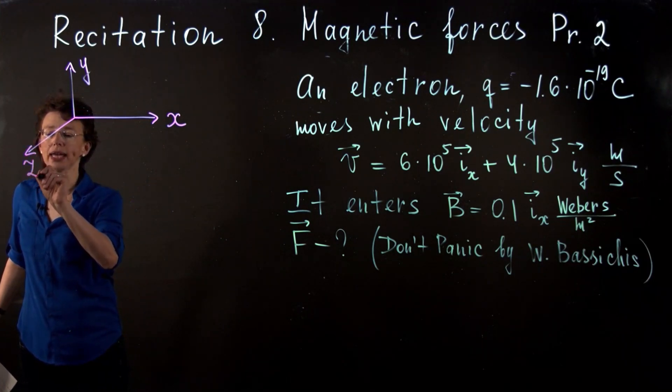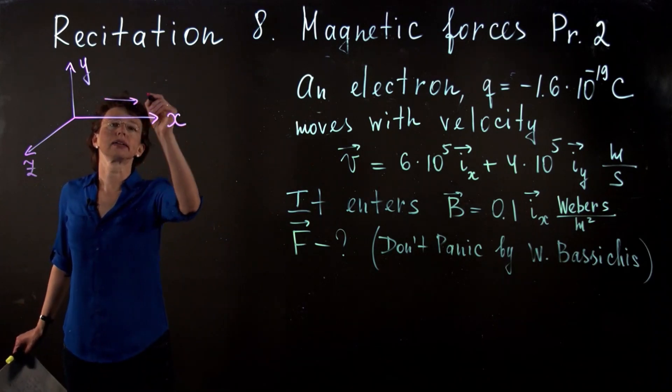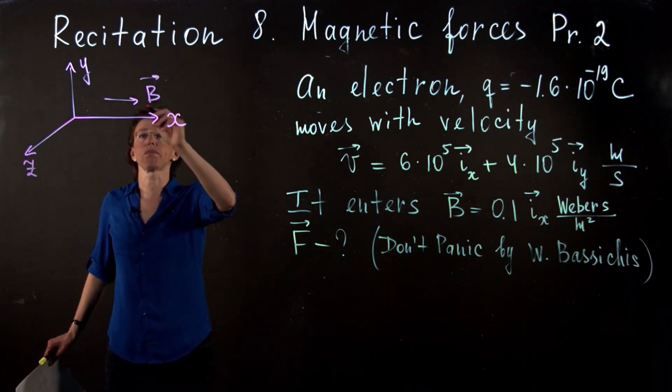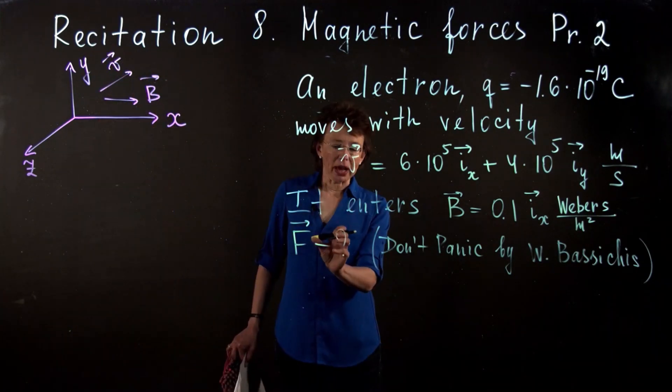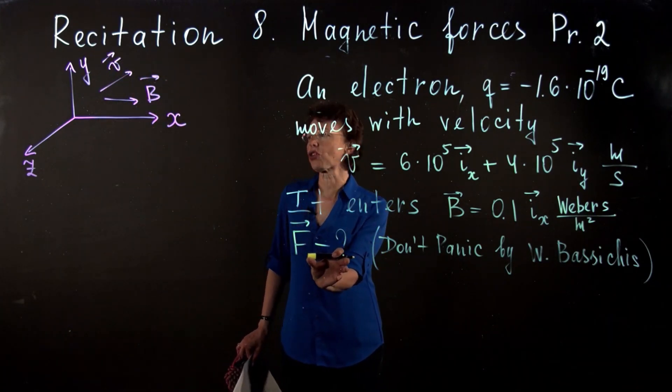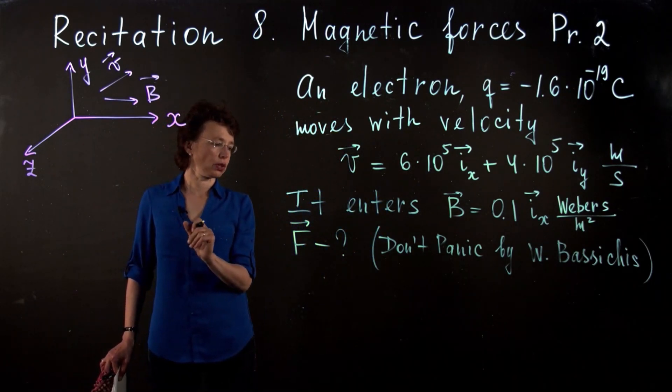Magnetic field is along x. Velocity had both components x and y. This is the velocity. What we are looking for is the force exerted on this negatively charged particle in this magnetic field.